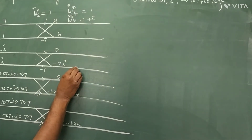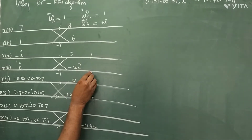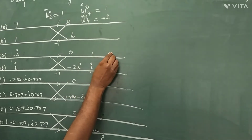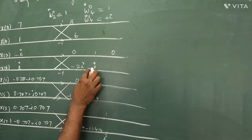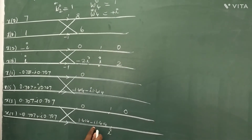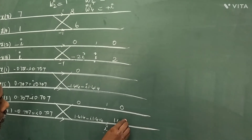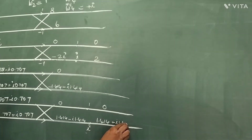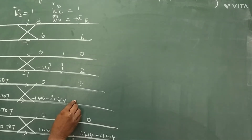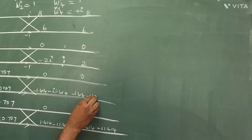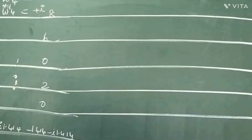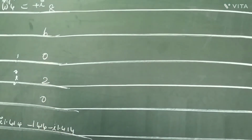We write the twiddle factor at the lower end of the butterfly: this one is 1 and this one is i. We have to multiply: 0 times 1 is 0. Then minus 2i times i: i squared is minus 1, so minus 1 times minus 2 is plus 2. Then 0 times 1 is 0. Multiplying by i again: i times i squared gives plus 1.414 plus i times 1.414. The remaining values are written as-is: 8, 6, 0, minus 1.414 minus i times 1.414. These are all the inputs to Stage 2.